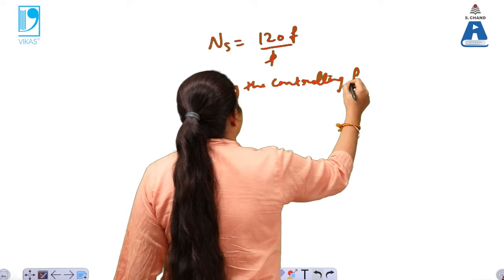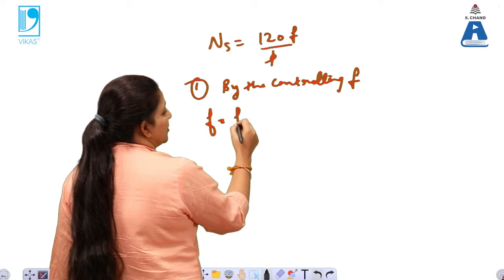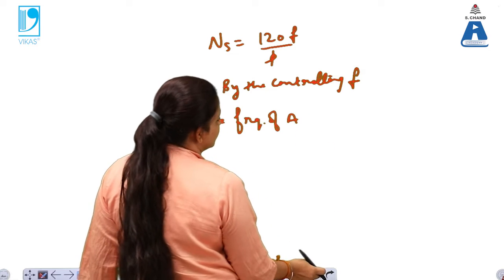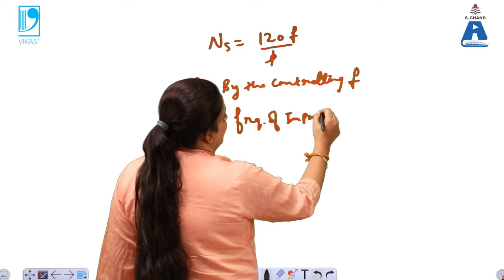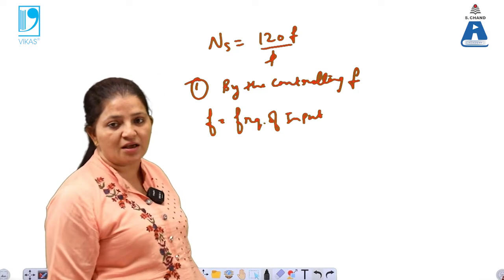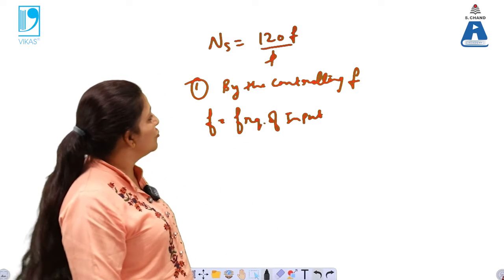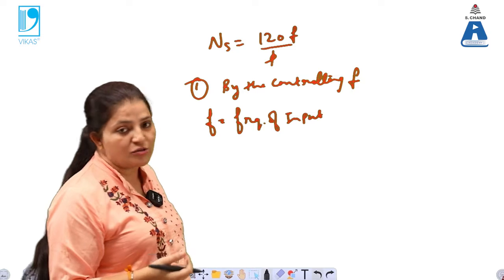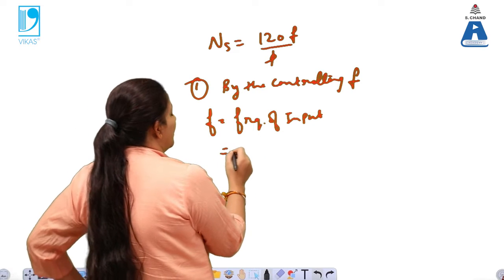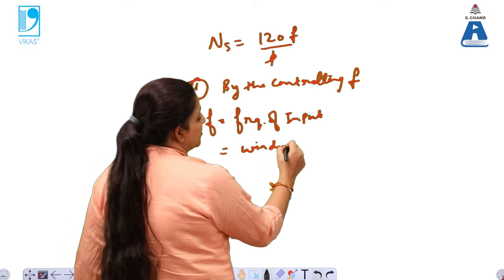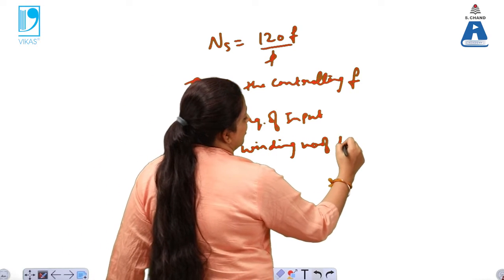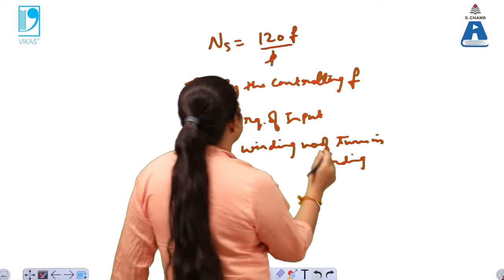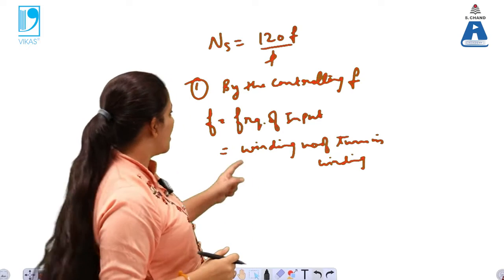F is the frequency of the AC input voltage. In the case of primary and secondary windings, the frequency is normally fixed. However, it can be controlled by altering the number of turns in the winding — by changing the number of turns in the given winding, the frequency can be controlled.